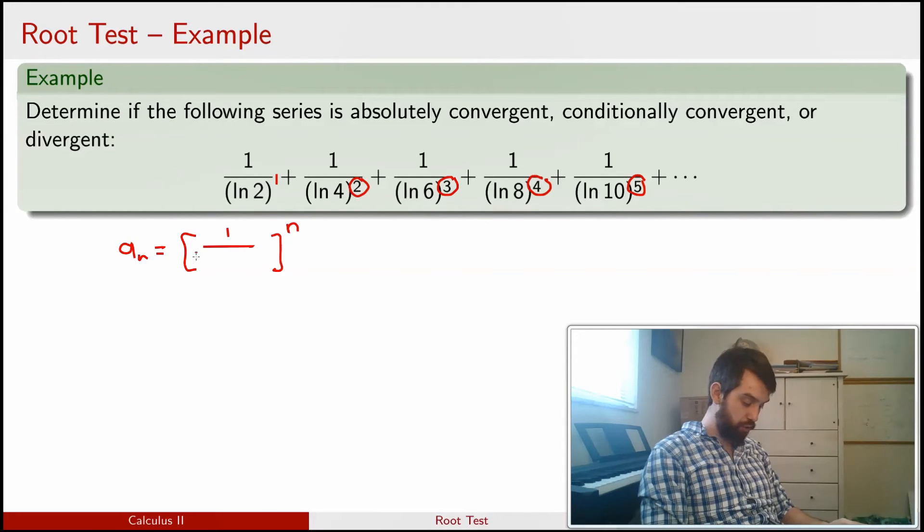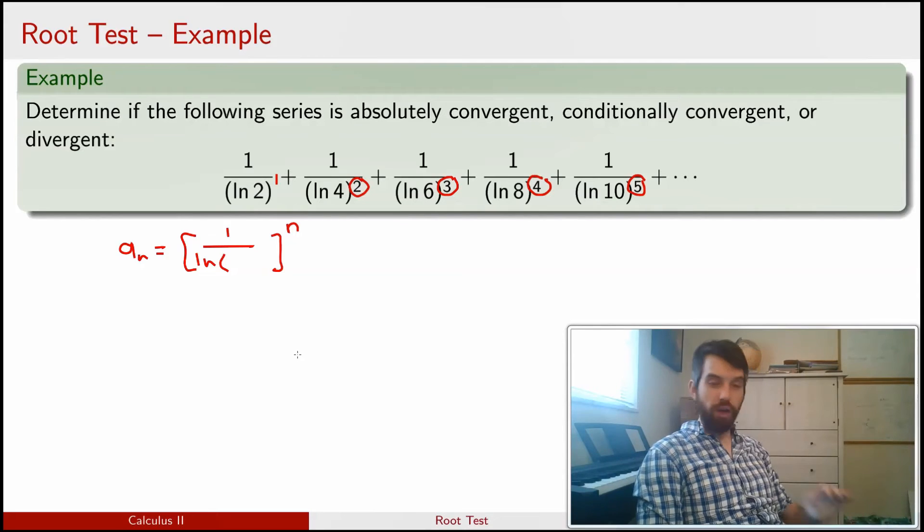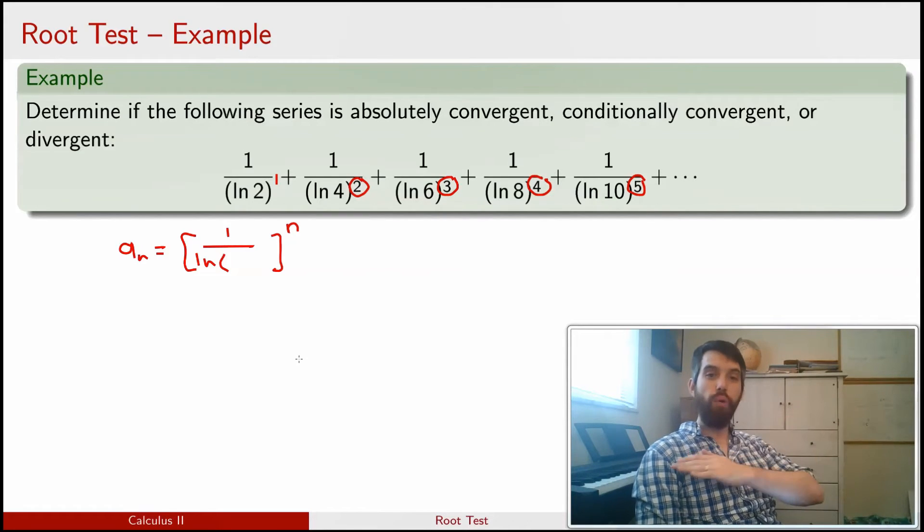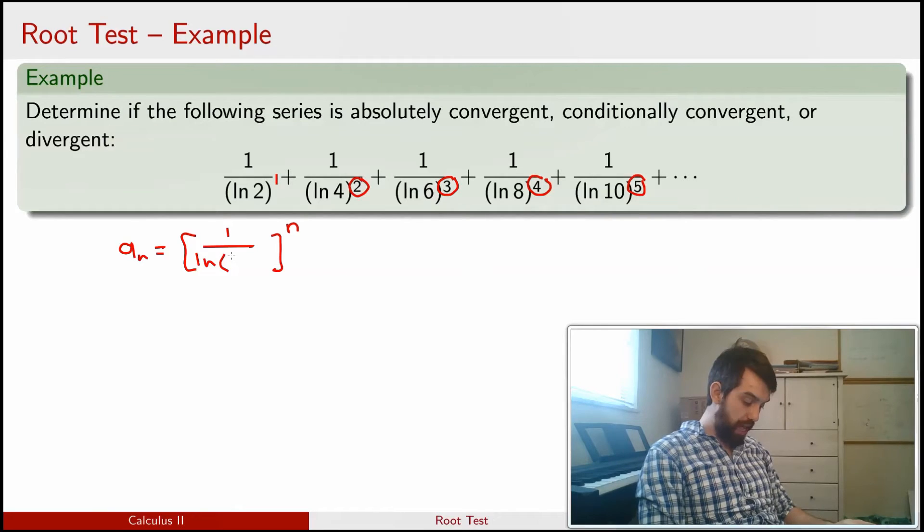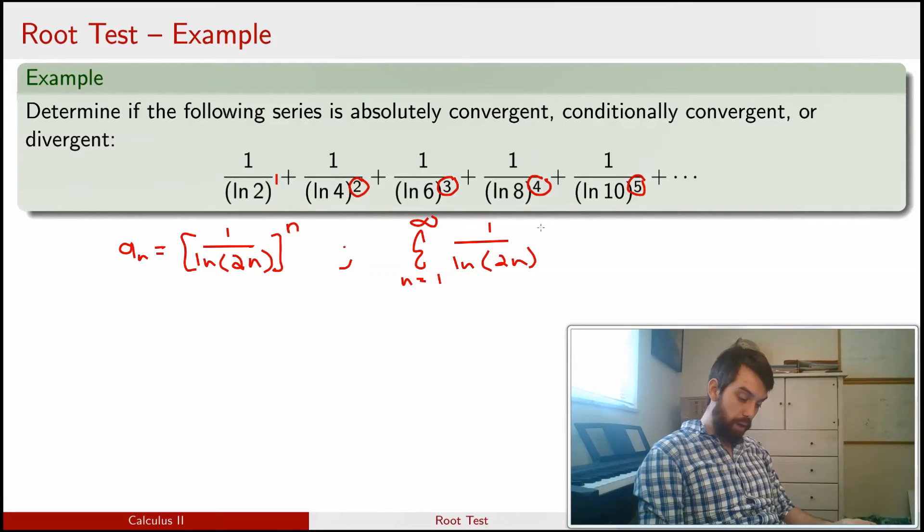And then what do I have on the inside? It's 1 over the natural log of something for sure. If n is 1 here, it goes 2, 4, 6, 8, it's always twice the value of n. So this is the natural log of 2 times n. So that's what our sequence is, and then what our series appears to be is the sum from 1 up to infinity of precisely that a_n, so 1 divided by the natural log of 2n, all to the power of n.